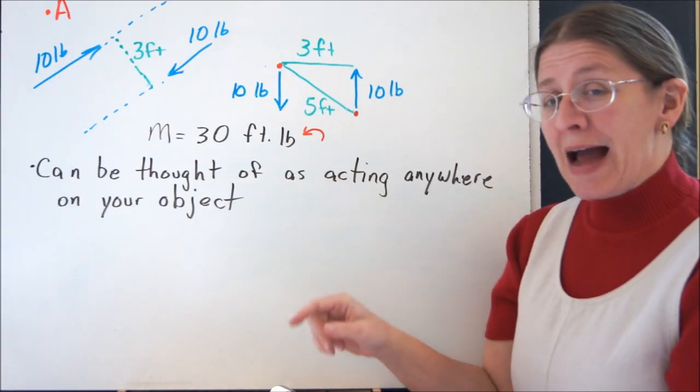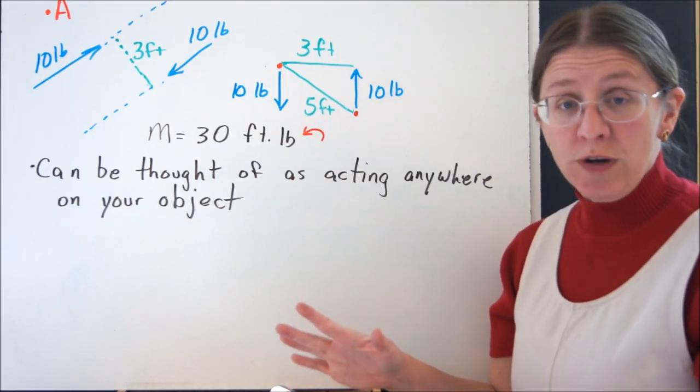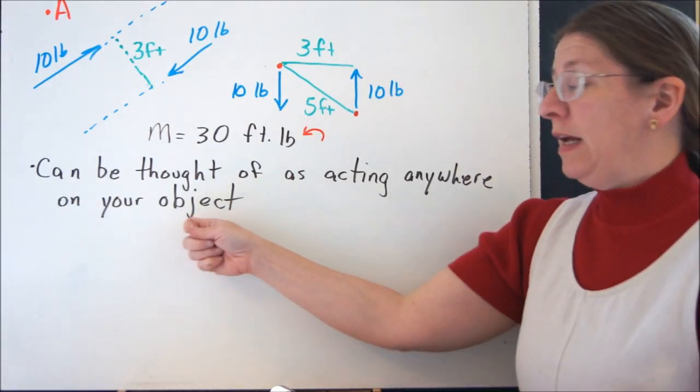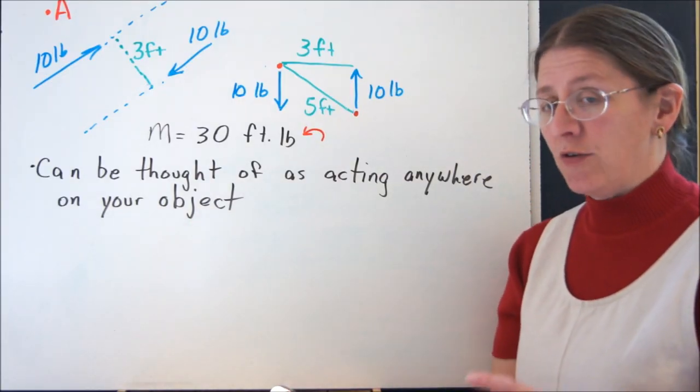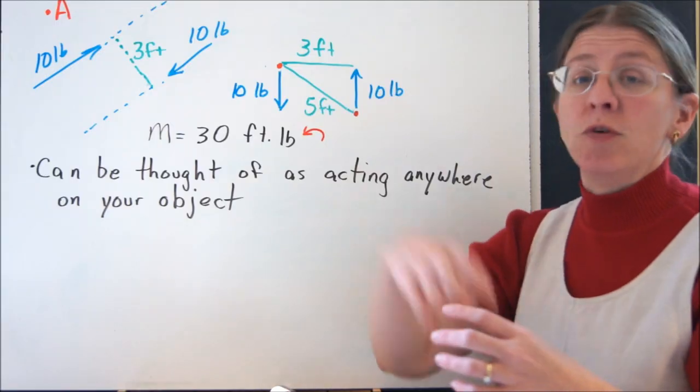Now this can be thought of as acting anywhere on your object because it's a free vector. With the key phrase here of on your object, you cannot move it to a different place. If you're going to consider a free body diagram of something specific, you can't move it off of your object.